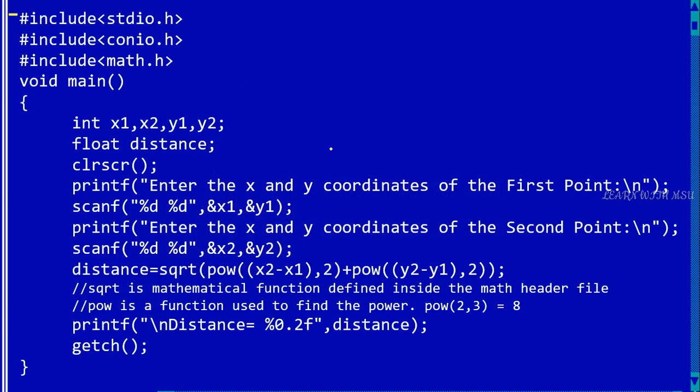So here I am writing the program. I am declaring four different coordinates: x1, x2, y1, y2, and then I am calculating distance as a floating point variable. Since we are going to use the square root function, we need the variable to be declared in a float.